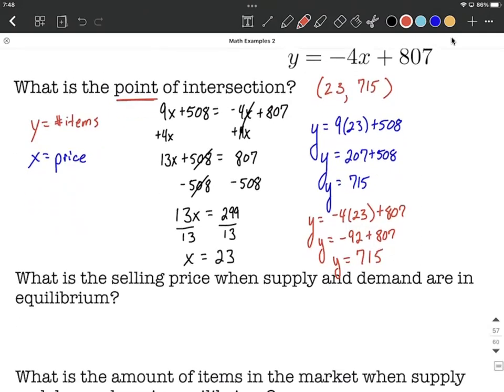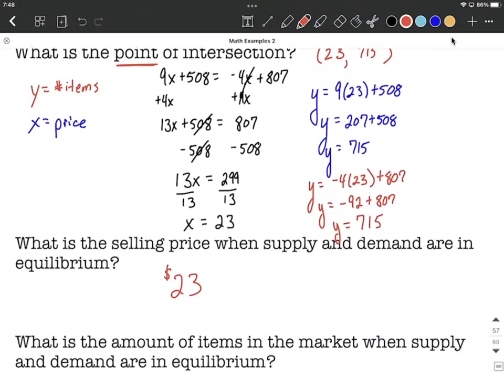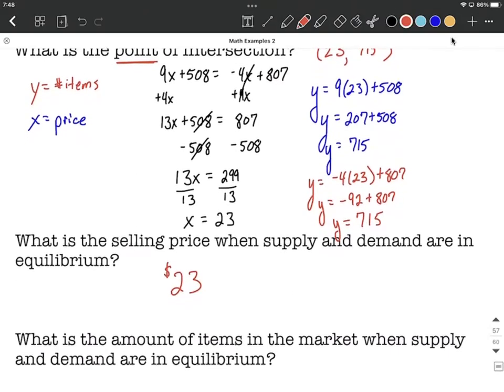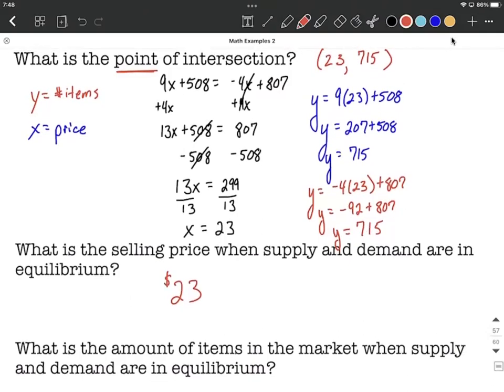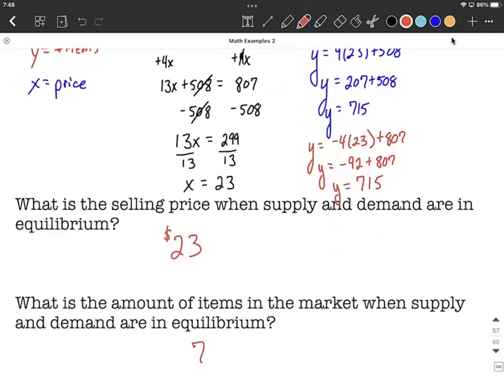Next, let's answer these follow-up questions. What's the selling price when the supply and demand are in equilibrium? Well, the selling price was our value for x. So we can say it was at 23 in our units, which are in dollars. And what's the amount of items in the market when supply and demand are at equilibrium? That was our y value, the number of items. So we can answer that as being 715.